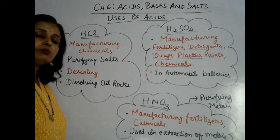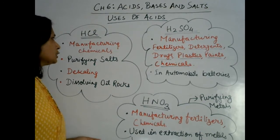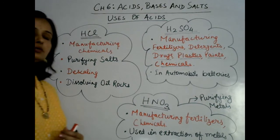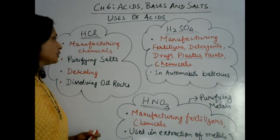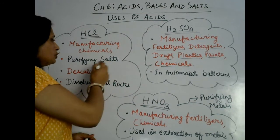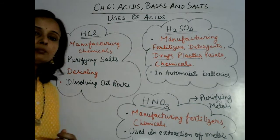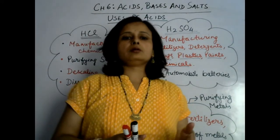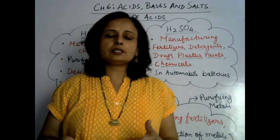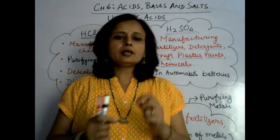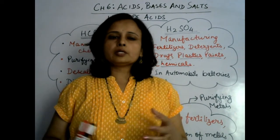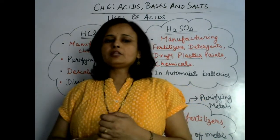Hydrochloric acid is used in manufacturing of so many chemicals. It is also utilized in purification of salts, because salts are found in impure form and it is utilized to purify the salt from its impure state. Then in descaling — in industries, boilers, or various kinds of equipment, a layer of unwanted substance is deposited, which is called scaling. Hydrochloric acid is utilized to clean that scale, and that process is called descaling.